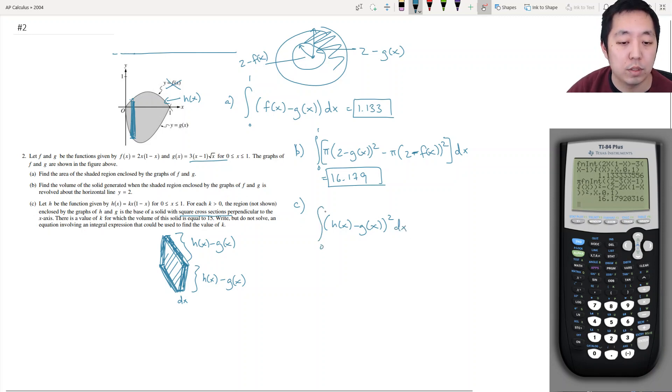And then I'm going to sum all of these from 0 to 1 still? Yeah, still 1. And so then this becomes the integral from 0 to 1 of [h of x, which is kx(1 minus x), minus g of x, which is 3(x minus 1)√x] squared dx. And we want to know what k value will give me this volume of 15. So that would be my integral setup.